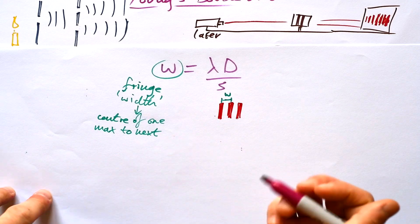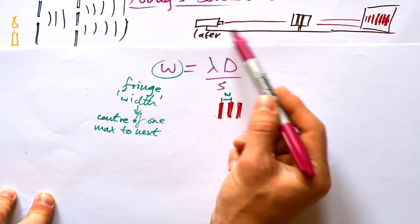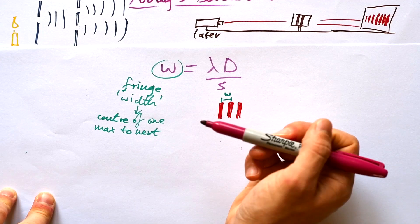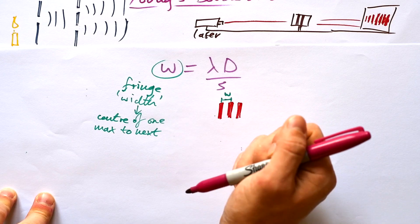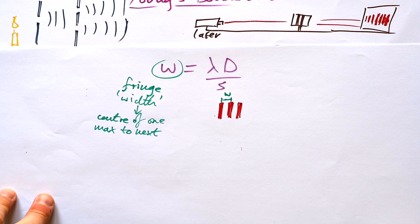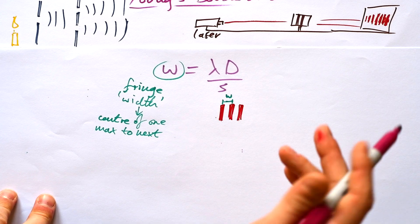Now as per usual there's a couple of different ways that we can do this. We could change the wavelength of light and we could see that if we have a bigger wavelength of laser light then that means that we're going to have a bigger fringe width. It's going to diffract more. Rule of thumb bigger wavelength bigger diffraction.